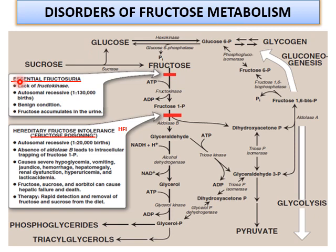There are two main disorders associated with fructose metabolism: essential fructosuria and hereditary fructose intolerance (HFI). Essential fructosuria is mostly asymptomatic and does not precipitate serious complications. It is characterized by a lack of fructokinase, so fructose cannot be converted into fructose 1-phosphate and elevated levels of fructose are seen. It is autosomal recessive with a prevalence of 1 in 130,000 individuals. The condition is benign, presenting with fructosemia and fructosuria.